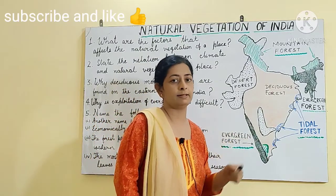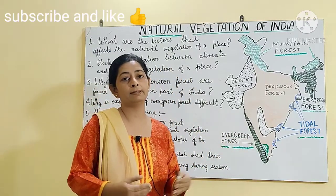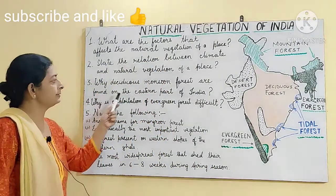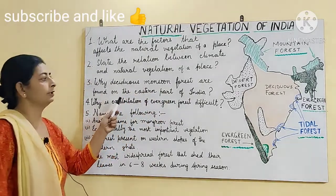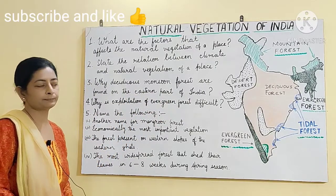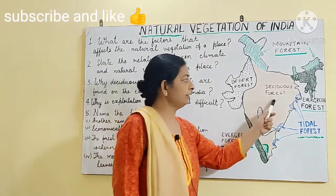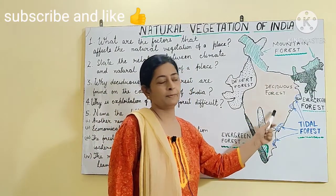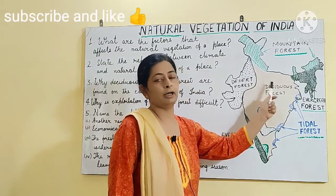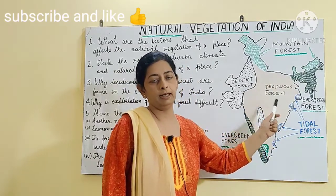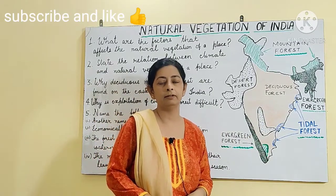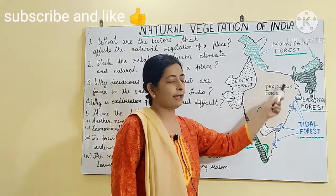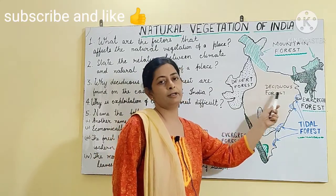They are called as desert vegetation and are adapted to desert climatic conditions. The next question is: why are deciduous monsoon forests found in the eastern part of India? Deciduous forests are found in the central and eastern parts of India because these regions receive moderate rainfall of about 100 to 200 cm, and because of this average rainfall, deciduous forests exist here.